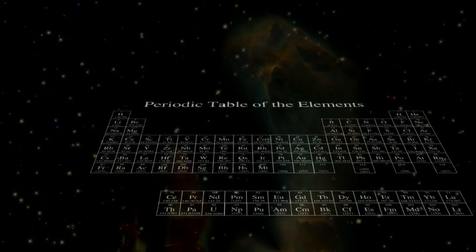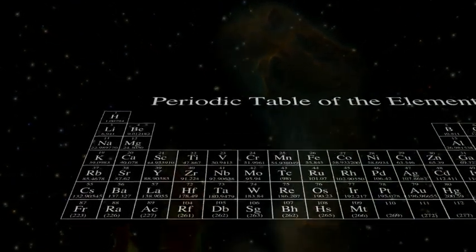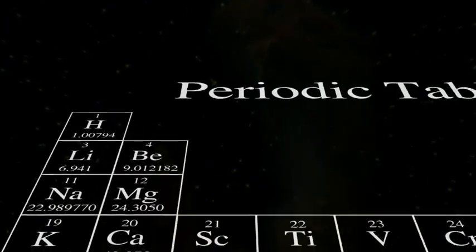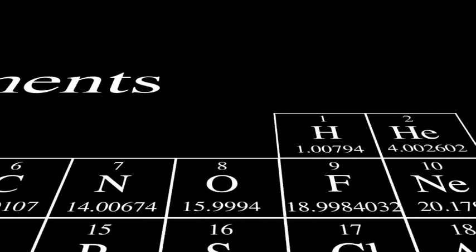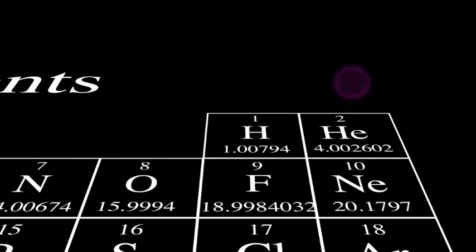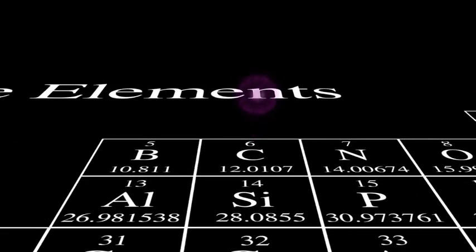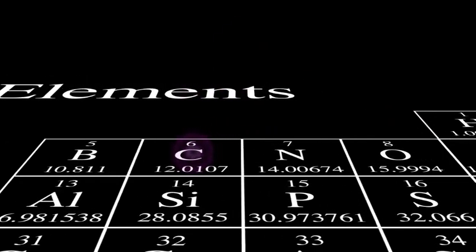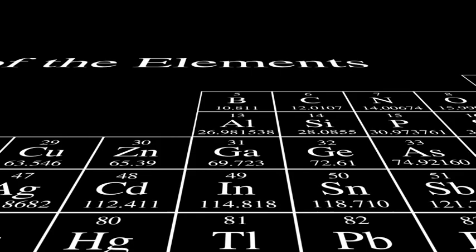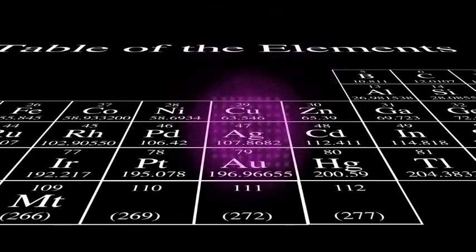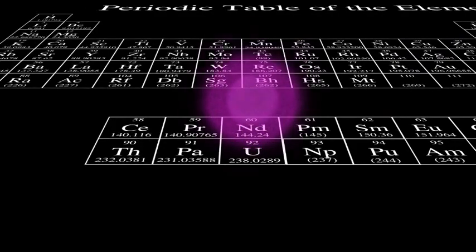The periodic table is a list of all the atoms in the universe that have different numbers of electrons. Hydrogen has one electron. Helium has two. Carbon has six. Oxygen eight. Gold has 79. And uranium has 92.